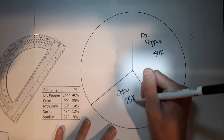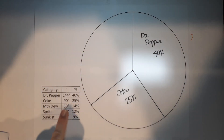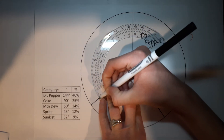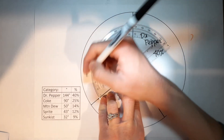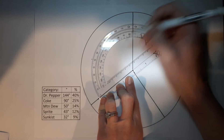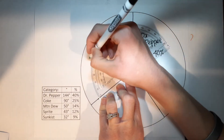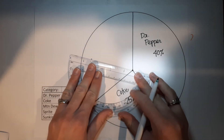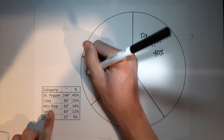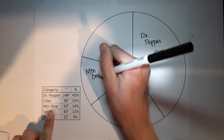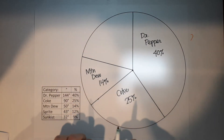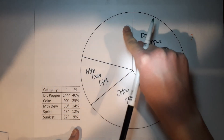Mountain Dew is 50 degrees. Measuring from the Coke line as my new zero, I go to 50 degrees — careful not to use the 50 on the other side, which measures from the opposite zero. Mark it and draw the line. That was Mountain Dew — 14%.